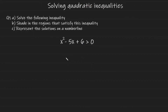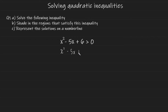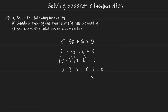For this problem we have to solve the following inequality, shade in the regions that satisfy this inequality, and finally represent the solutions on a number line. I first make this quadratic inequality a quadratic equation, so we can factorize this expression to get the following, and now we can equal each bracket to zero. Rearranging for x gives us the roots x equals three and x equals two.